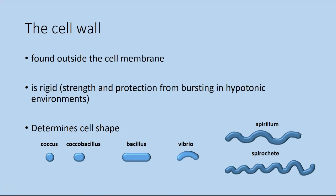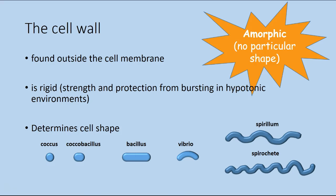Cells without a cell wall are going to be amorphic — they won't have a fixed shape. An example of amorphic cells are the bacteria known as mycoplasma. Mycoplasma do not have a cell wall. They live inside a host cell that helps them maintain the constant isotonic environment they need to grow in.